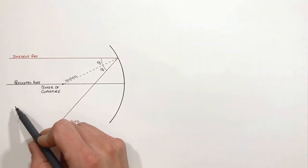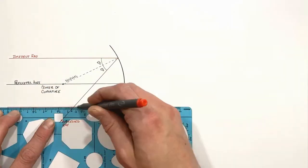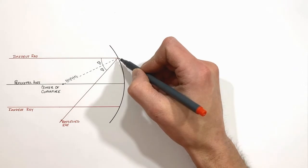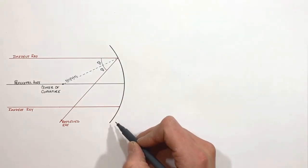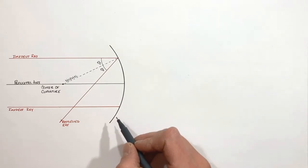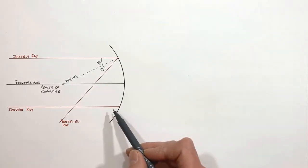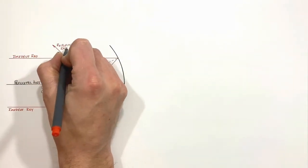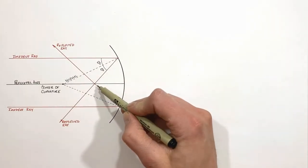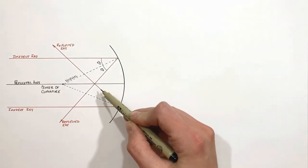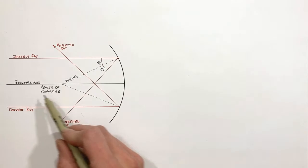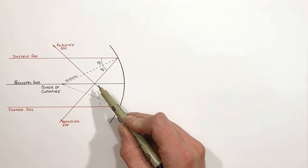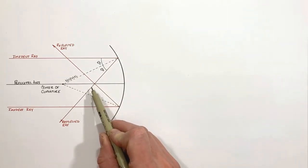Let's look at another ray which strikes the mirror — how about one down here? Because this ray strikes the mirror at a different position than our original ray, it will be reflected in a different direction. But again, the incident angle must equal the reflected angle, and again the normal vector passes through the center of curvature. You'll see these two reflected rays converge right here. We could draw an incident ray anywhere we want, and so long as the ray strikes the mirror traveling parallel to the principal axis, the reflected ray will pass through this point always. We call this point where all of the reflected rays converge the focal point.